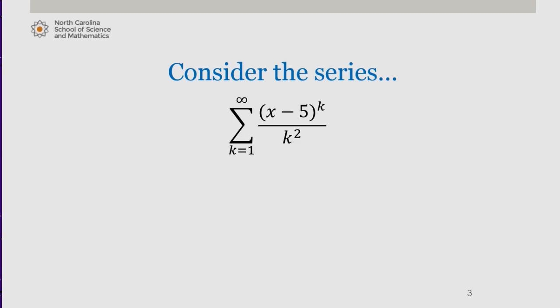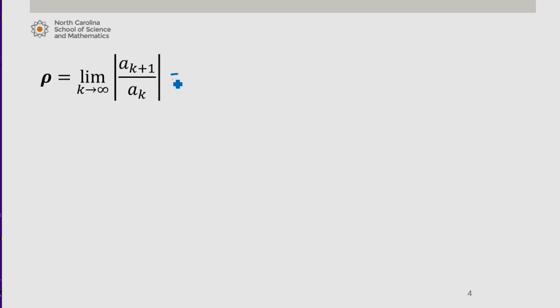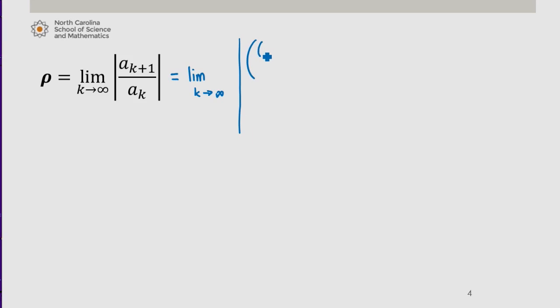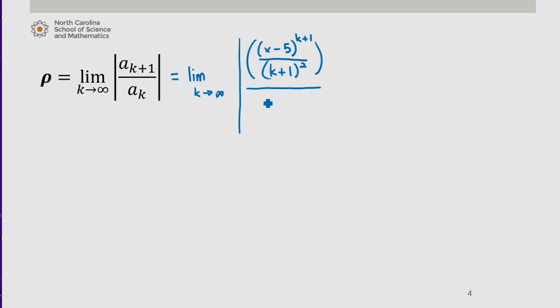Now applying the ratio test for absolute convergence to this series, we obtain the following for rho: the limit as k approaches infinity of the absolute value of a sub k plus 1 over a sub k, which is equal to the limit as k approaches infinity of the absolute value of (x minus 5) to the k plus 1 divided by (k plus 1) squared, all divided by (x minus 5) to the k divided by k squared.